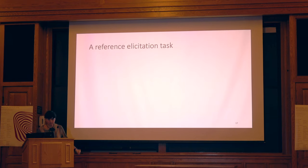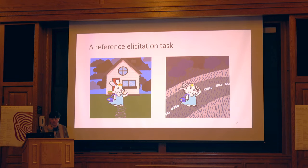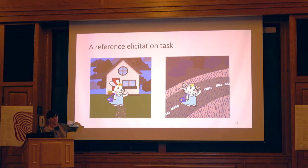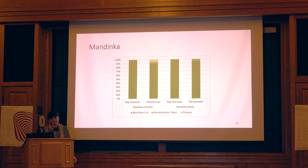Now on to the data. It's a very simple study. We showed kids vignettes and we were interested in reference to new and old characters — for example, a bunny in her house. Twenty kids and fifteen adults in each language told us what they saw and how the story continued. We would expect things like 'there's a bunny', and then 'the bunny' or 'she'. It would be a little odd to say 'a bunny is leaving the house and a bunny is under the rain', because that presupposes different bunnies.